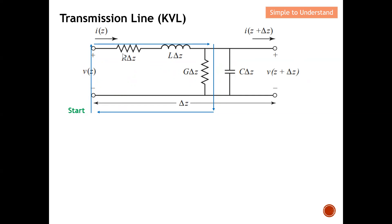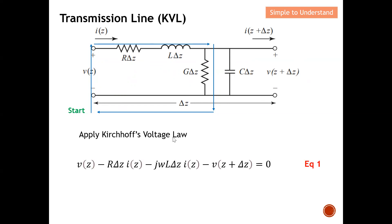Applying KVL around the closed loop: V(z) equals the voltage drop across the resistor, which is I(z) × R × Δz, plus the voltage drop across the inductor, which is I(z) × jωL × Δz, plus V(z + Δz). The impedance of the inductor is jωL, and the current flowing through the inductor is I(z). This gives us the first KVL equation.